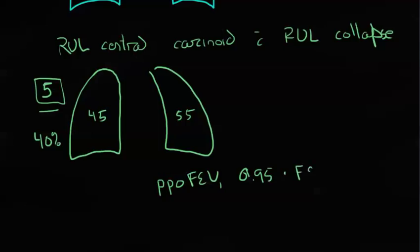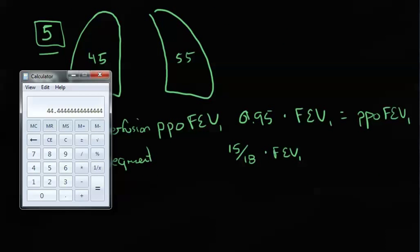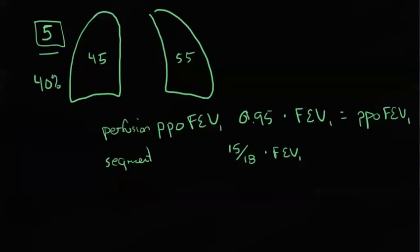Multiply that by their FEV1 to get their predicted value, predicted post-op FEV1. And that, again, would be better than using a segmental approach, because with a segment approach, removing the three segments from the right upper lobe, so this is a perfusion, and with a segment, it would have been 15/18ths times their FEV1, which is 83%, or 0.83 multiplied by their FEV1.